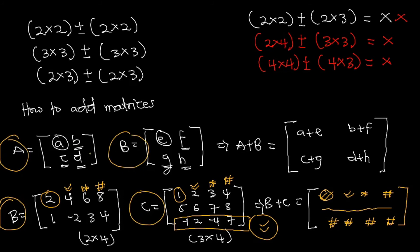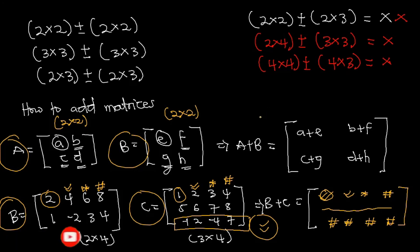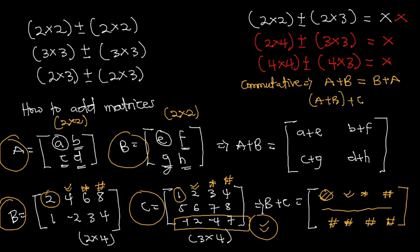Addition of matrices is commutative, which means matrix A + B equals matrix B + A. Also, if we add matrix A + B first and then add C, it is the same as adding B + C first and then adding A — provided all matrices have the same order.